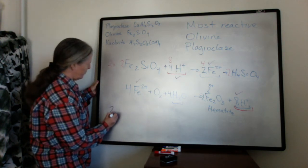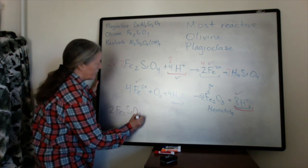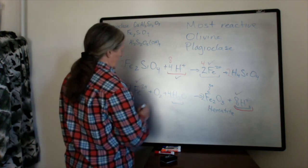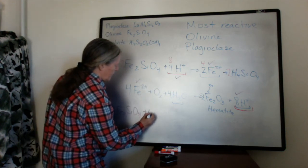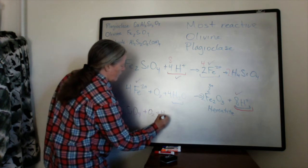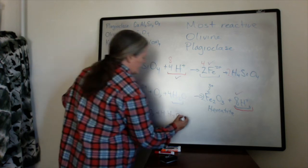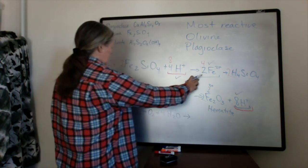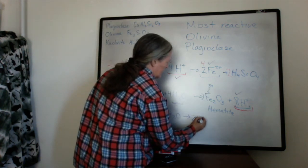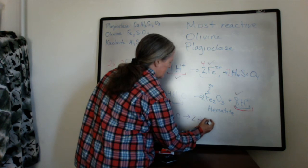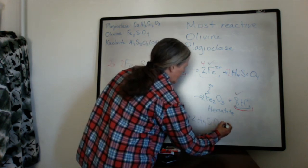So we end up with two olivines. And on this side we need plus an oxygen, plus four water molecules. And then we have our products on the other side. This canceled out with this. We have two hydrosilicas and two hematites.